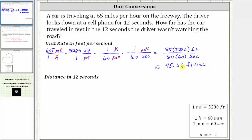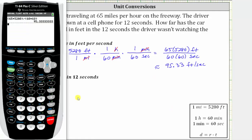But we don't want to use a rounded unit rate to find the distance traveled in 12 seconds. So let's go back to the calculator and find the exact simplified rate. To do this, we press math, enter, enter, which gives us the exact fraction for the previous entry. So the exact simplified rate would be 286 feet per three seconds.